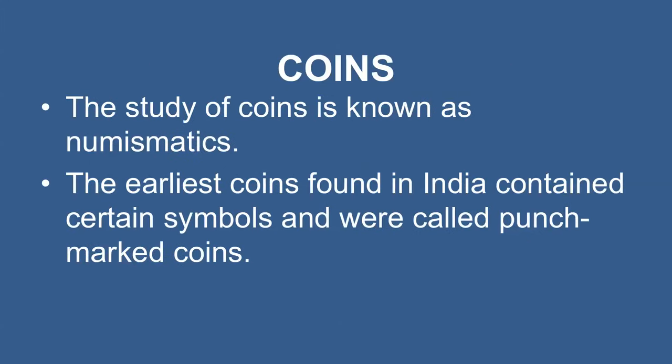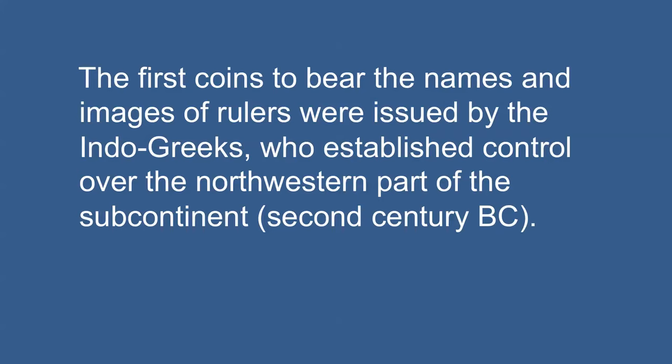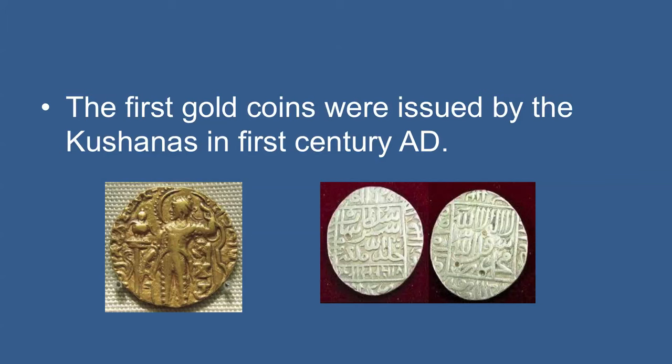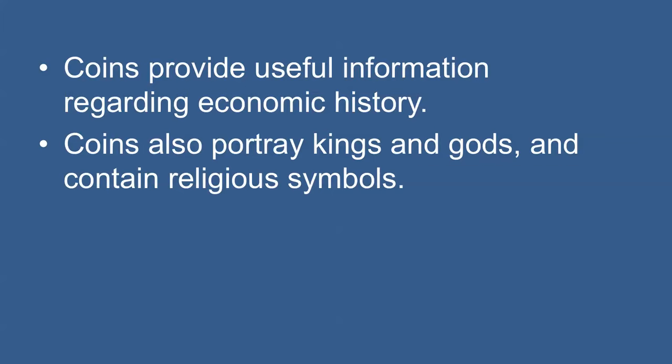The study of coins is known as numismatics. It not only includes visual elements such as script and image on the coins but also metallurgical analysis. Ancient coins were mostly minted in metals such as copper, silver, gold and lead. The earliest coins found in India contained certain symbols and were called punch mark coins, made of silver and copper. The first coins to bear the name and images of rulers were issued by the Indo-Greeks who established control over the north-western part of the subcontinent. The first gold coins were issued by the Kushanas in the 1st century AD, and some of the most spectacular gold coins were issued by the Gupta rulers. Coins provide useful information regarding economic history, portray kings and gods, and throw light on the art and religion of the time.